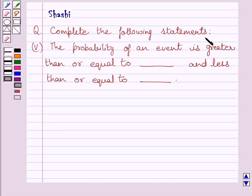Question says, complete the following statements. Fifth part is: the probability of an event is greater than or equal to dash and less than or equal to dash.